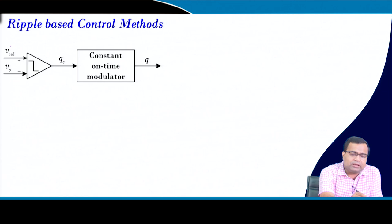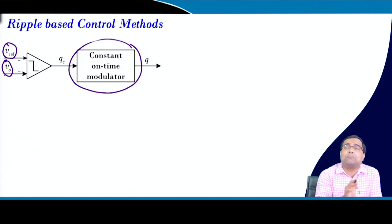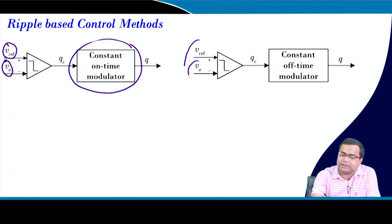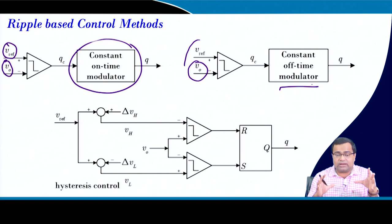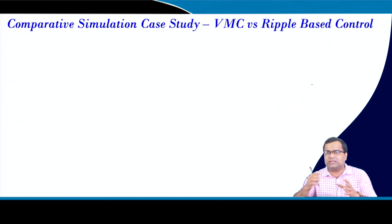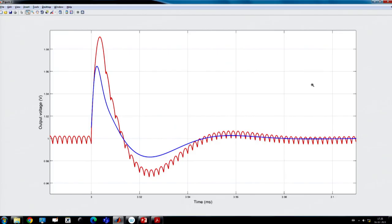In ripple-based control, the output voltage is directly compared with the reference voltage, and the comparator output goes to the constant on-time modulator. There is no compensator - you get the full output voltage with ripple information. Similarly, constant off-time can retain output voltage ripple information. The third option is hysteresis control, which directly works on the voltage or current ripple.